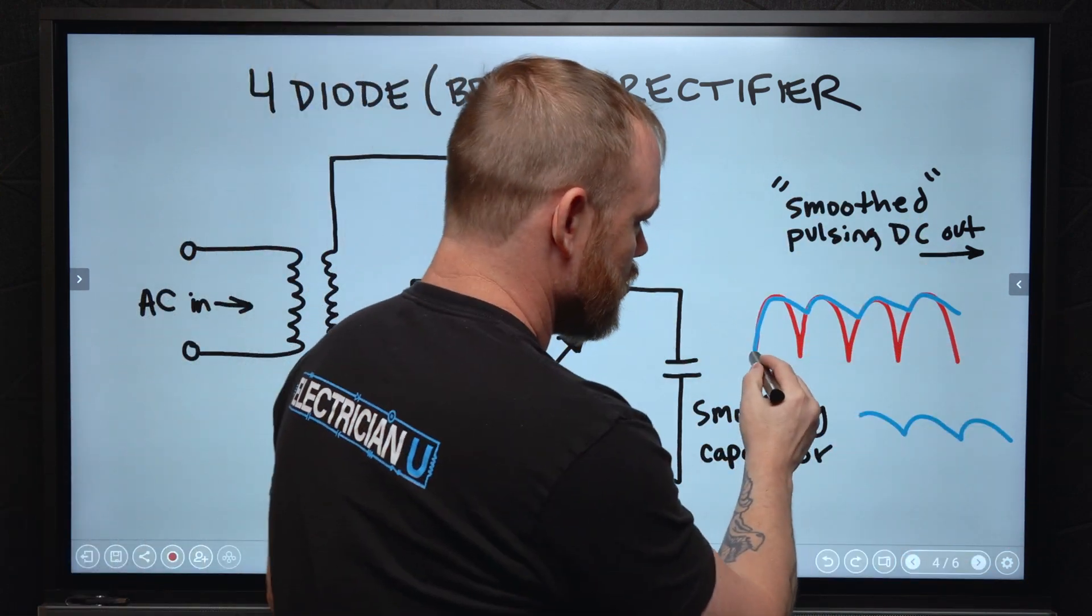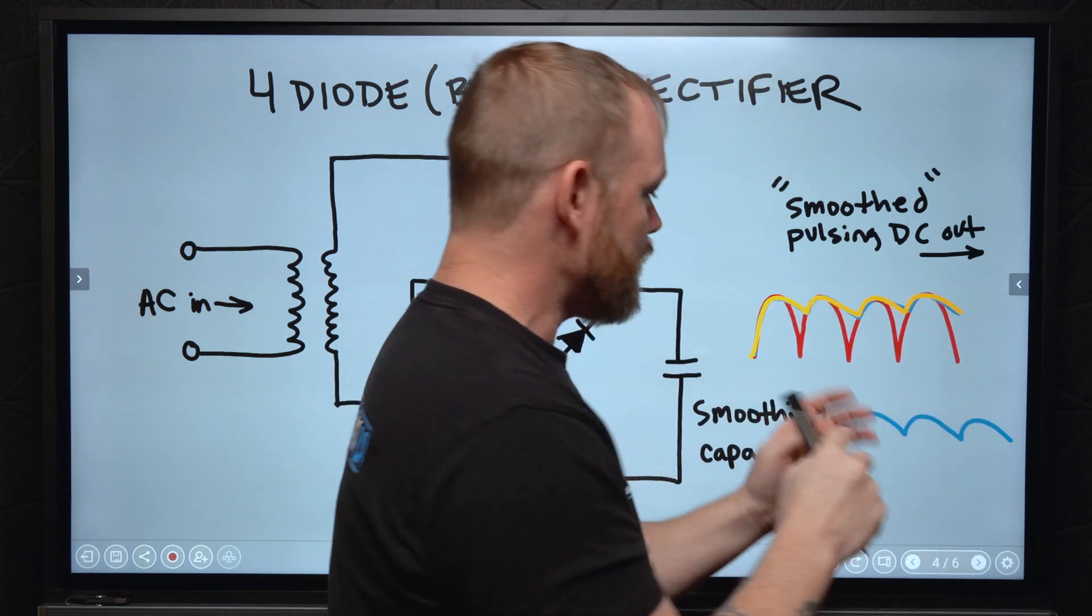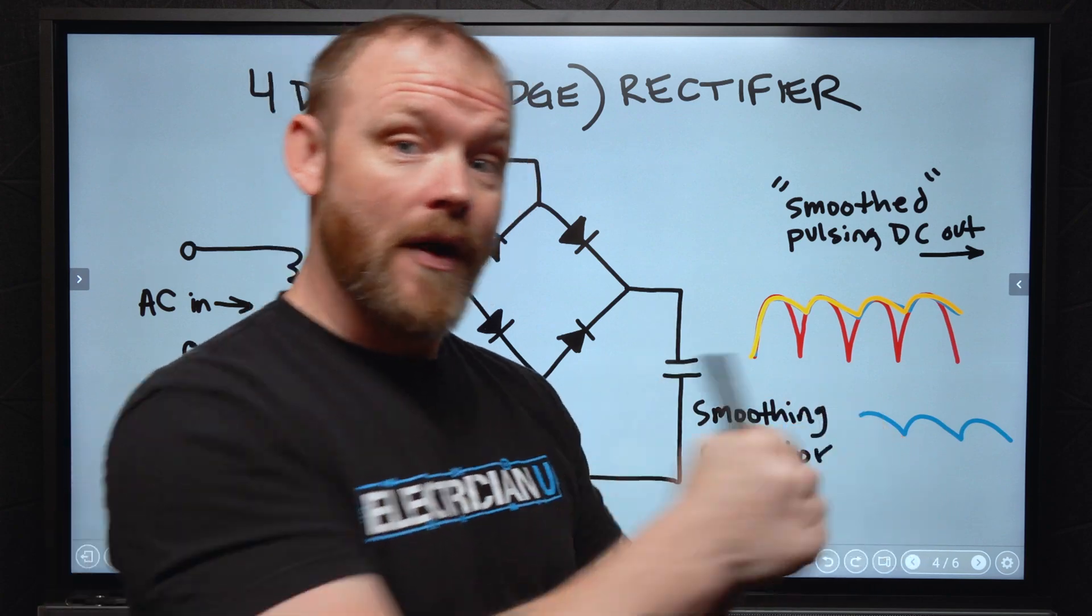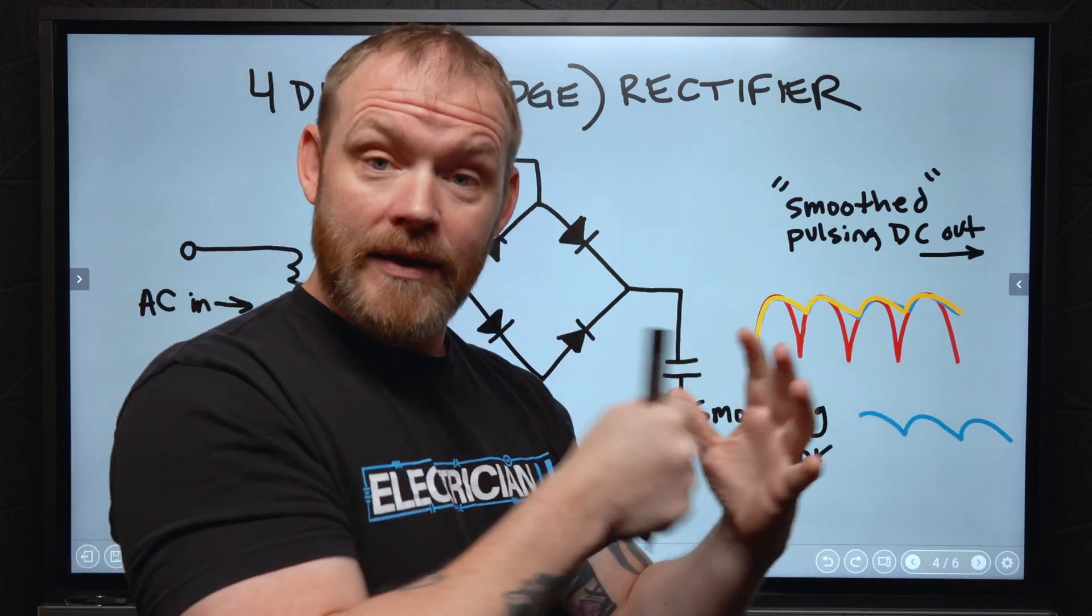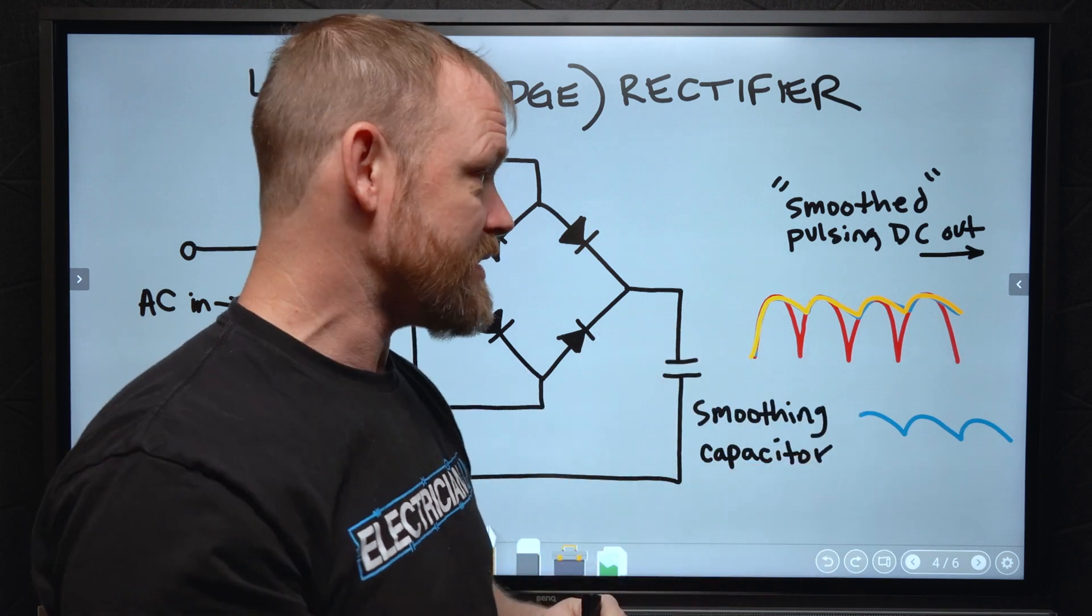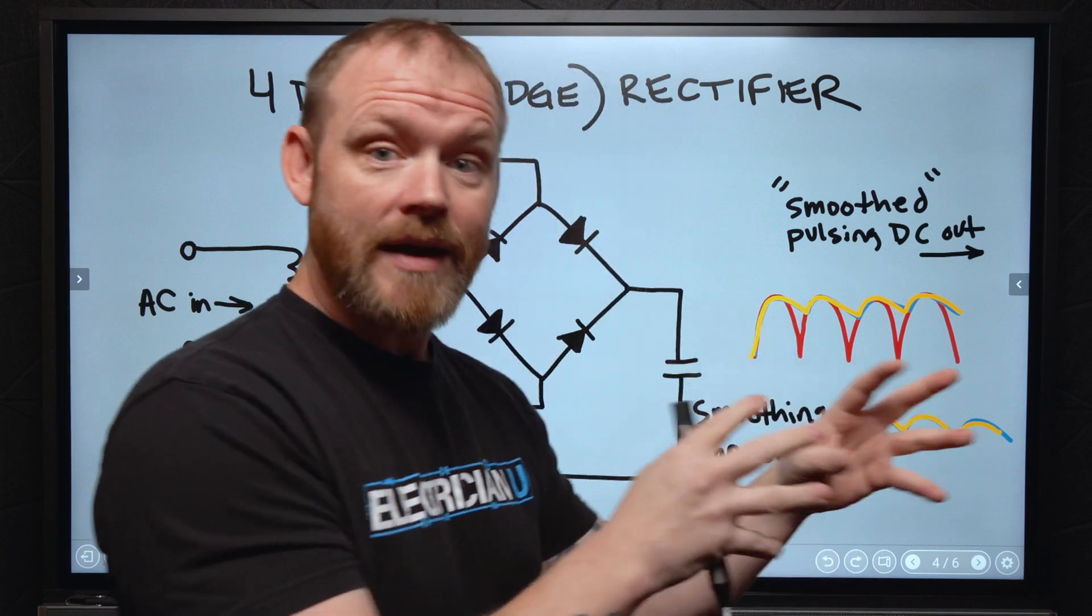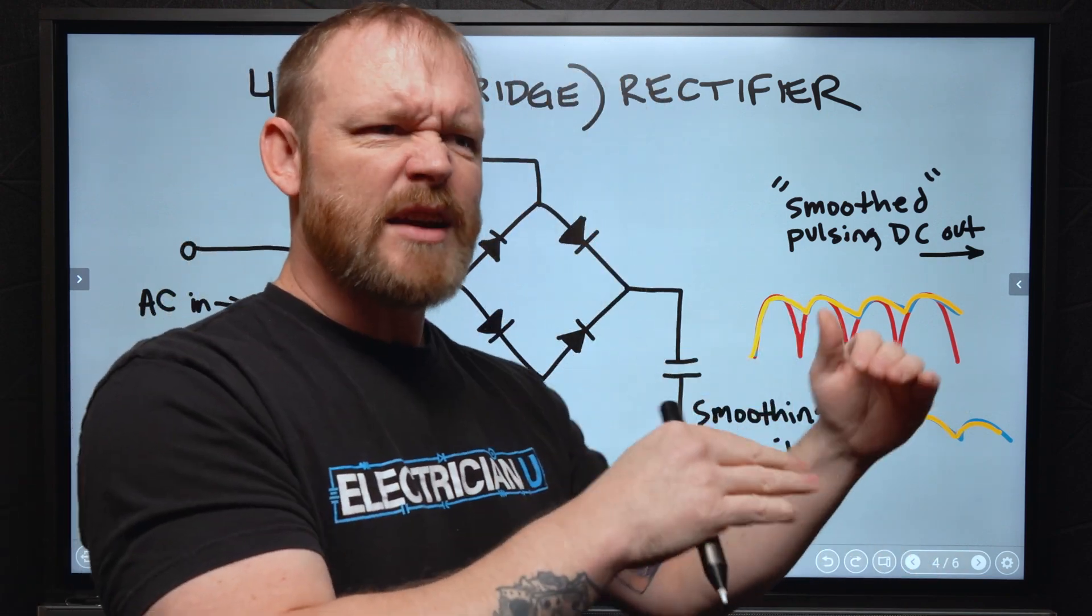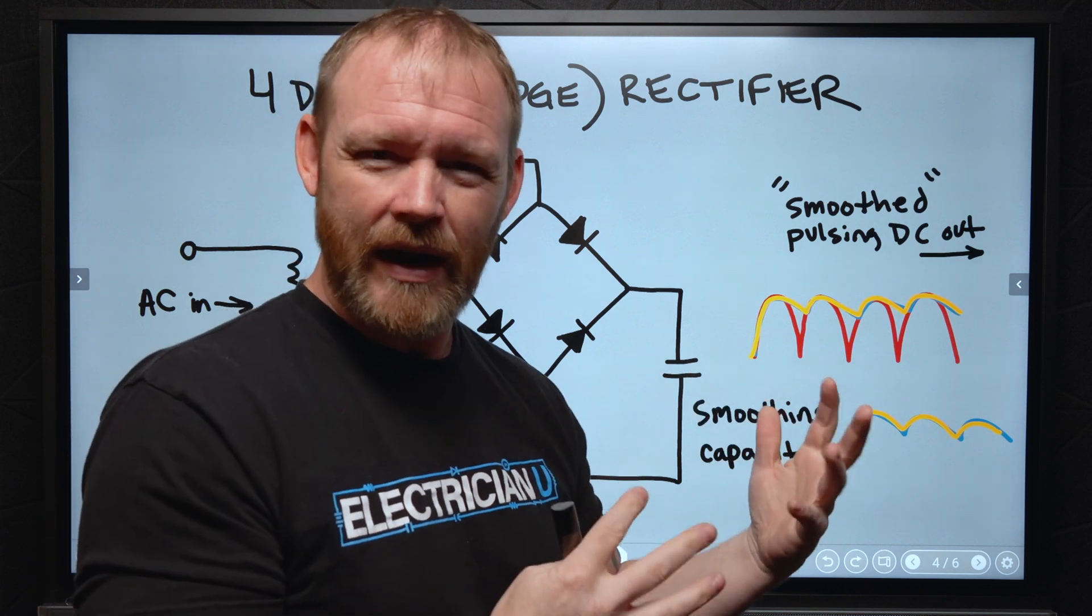So without getting crazy into all of that, essentially what we're able to do is we're able to shape this waveform a little bit more like this. So rather than pulsing going on, off, on, off, on, off, and being really difficult on that device that's trying to utilize this DC, we're actually smoothing this out to kind of like a little bit of a ripple. And so for that device, it's like, oh, this actually kind of does seem like DC.